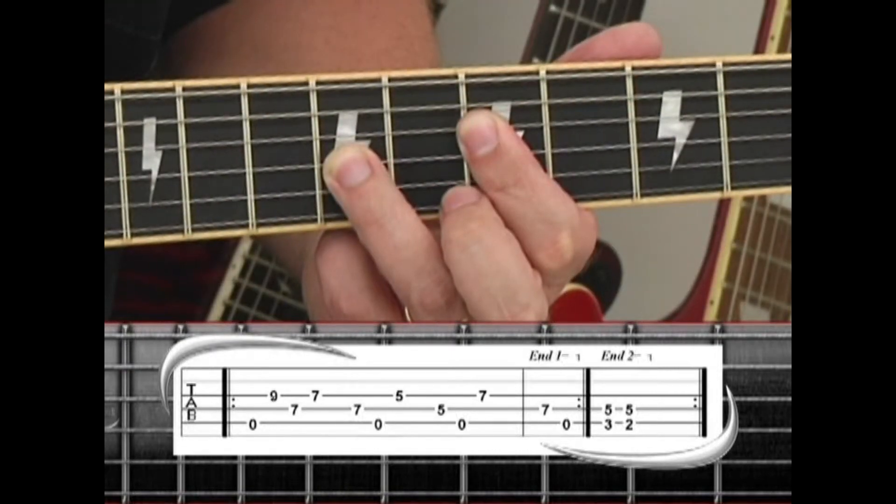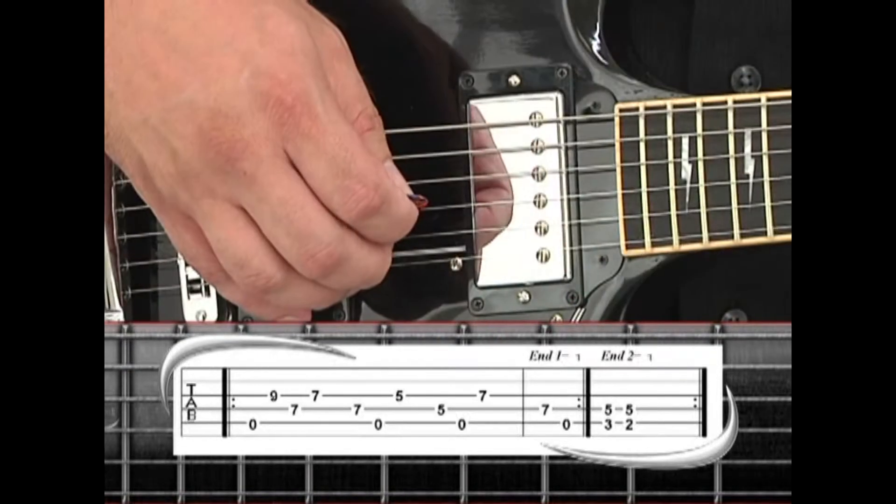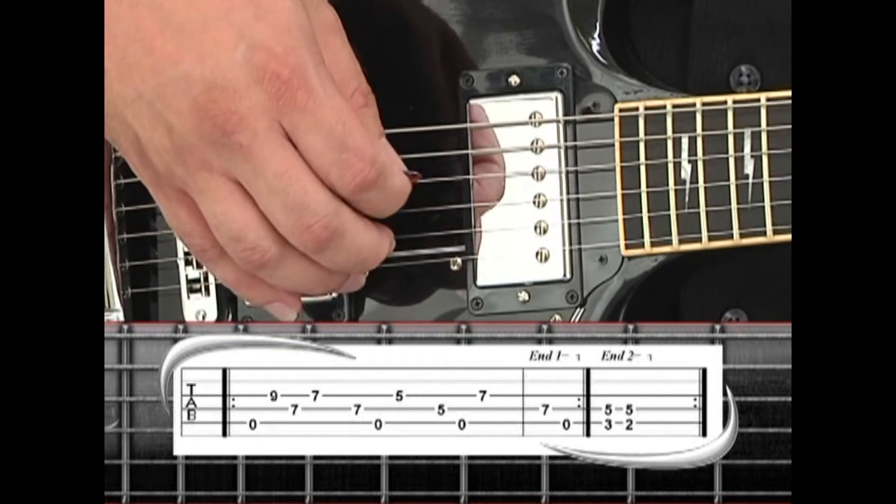Lift the ring finger, exposing the seventh fret bar, and pick strings three, four, and five.